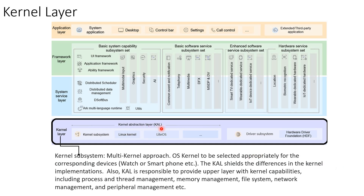We have something called the Kernel Abstraction Layer, or KAL. This KAL shields the differences in the kernel implementations. Importantly, it provides the upper layer with all the kernel capabilities — process management, thread management, memory management, file system, network management, and peripheral management. The kernel abstraction layer is very important.